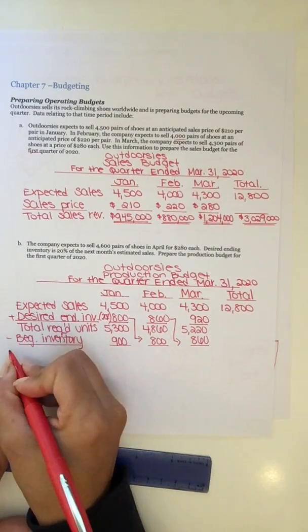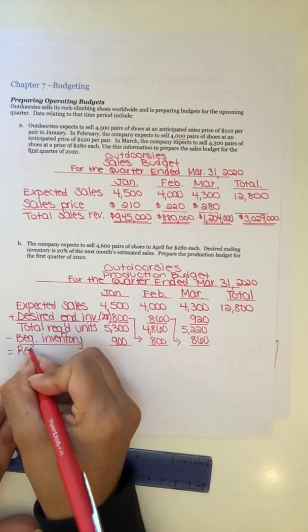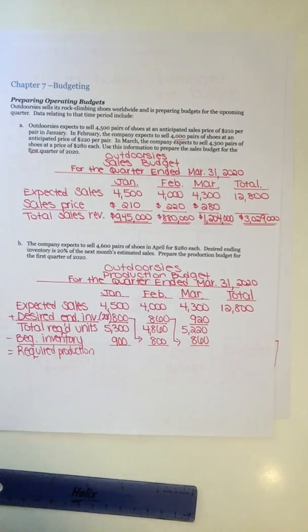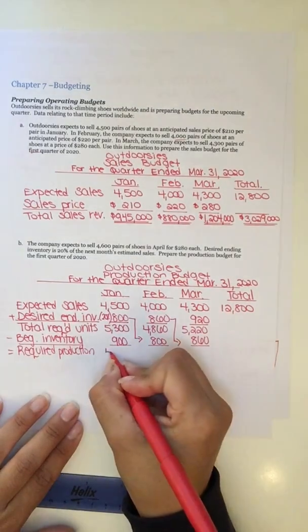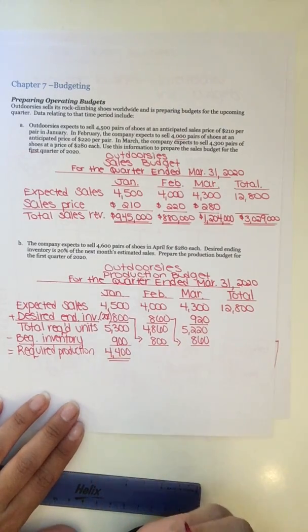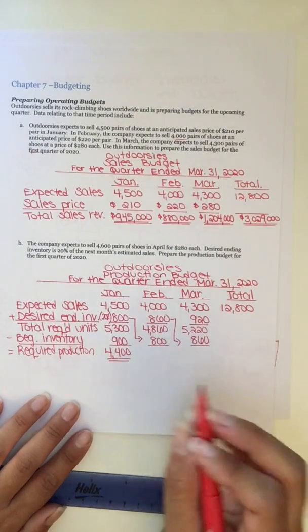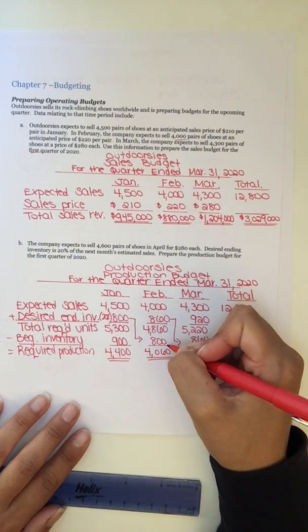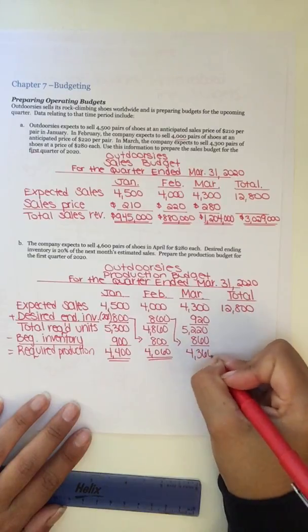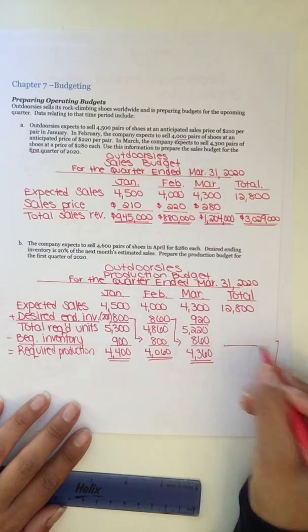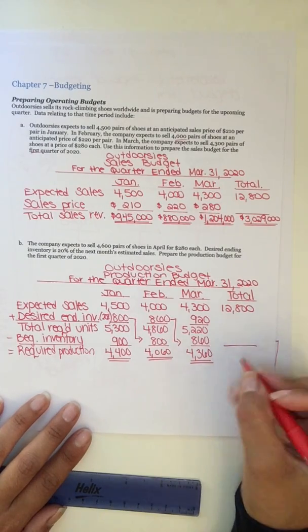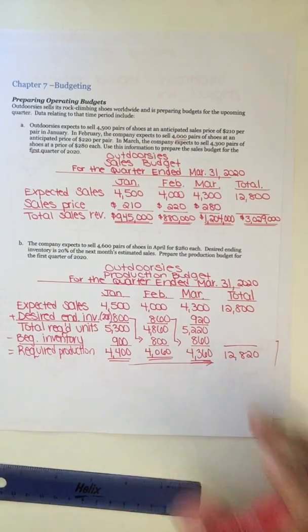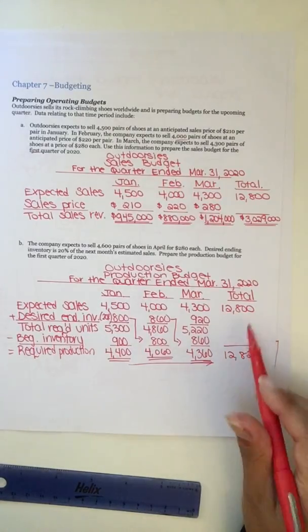Alrighty, so now we go ahead and add, I'm sorry, take the difference, and that's our required production. Required production. Take the difference. 5,300 minus 900, 4,400 is your units to be produced for January. In February, we need to produce 4,060 units based off of our sales, what we want to end with, and how much we plan to start with. And then March, 4,360. And then here, I did total it up. We're going to have a total of 12,820, because that's going to help us out in our subsequent budgets. If you want to fill in the rest there, go for it. If you want to omit it, go for it, because that's also consistent with your book.